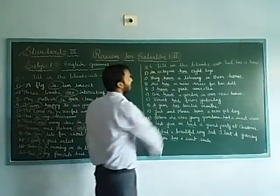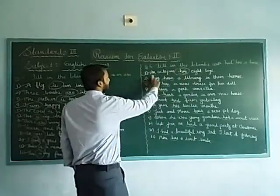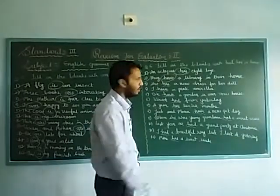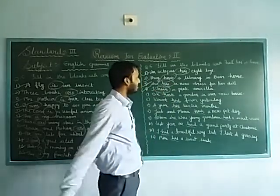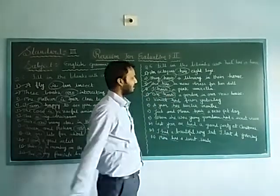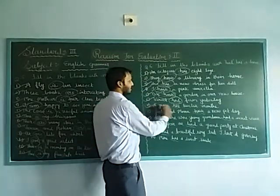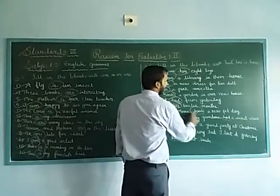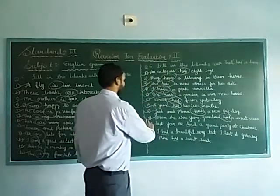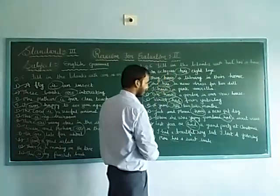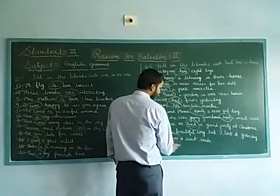Now recap of have/has/had answers. First: an octopus has eight legs. Second: they have a library in their house. Third: she has nutrients for her dog. Fourth: I have a pink umbrella. Fifth: we have a garden in our new house. Sixth: we had fever yesterday. Seventh: a year has 12 months. Eighth: grandma had a sweet voice. Ninth: last year we had a grand party. Tenth: I had a beautiful ring but I lost it yesterday. Eleventh: Minnie has a sweet smile.